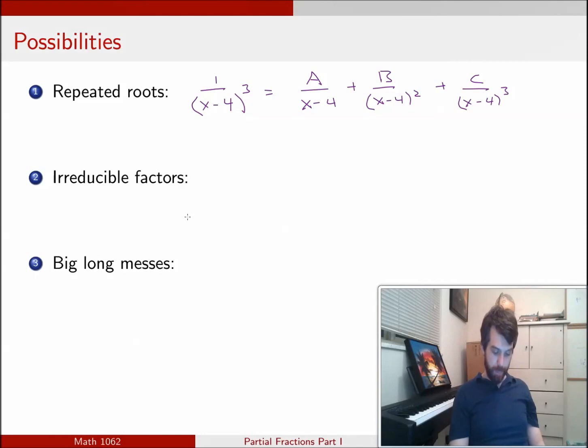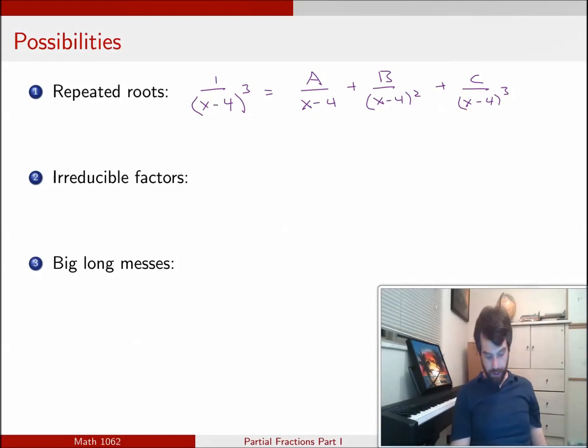It's also possible that you have something called irreducible factors. So what about something like this, 1 over x plus 4 times x squared plus 1. Now in this scenario, I have not written this as the product of all linear terms. We have this x squared plus 1, and this is referred to as an irreducible factor.